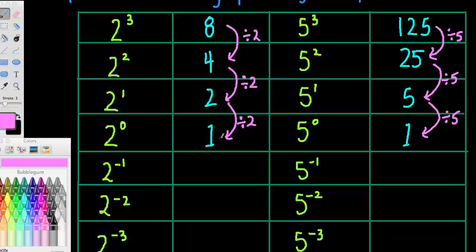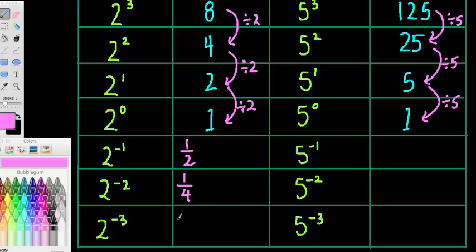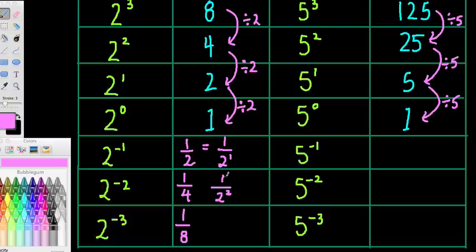We can continue this pattern, because on this left-hand column we've dropped an index each time, and that equates to dividing by 2 each time. If we divide 1 by 2, we get 1 over 2. If you divide a half into 2 pieces, you get a quarter. What you might be able to see here is this is actually the same as saying 1 over 2 to the power of 1. 1 over 4 is the same as 1 over 2 squared, and 1 over 8 is the same as 1 over 2 to the power of 3.